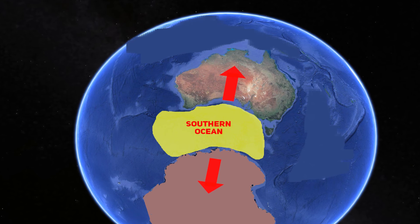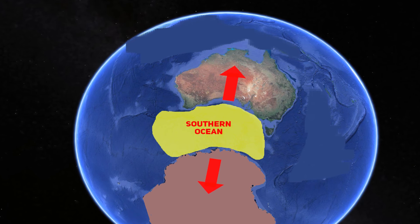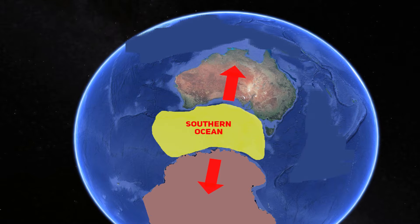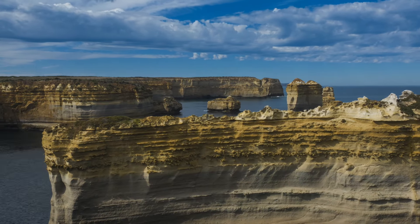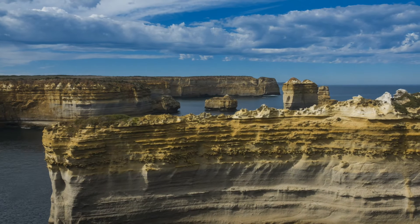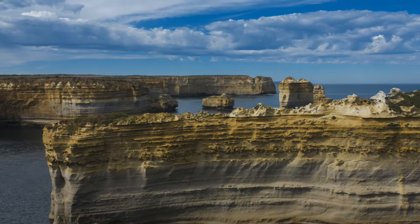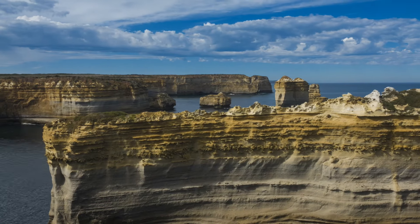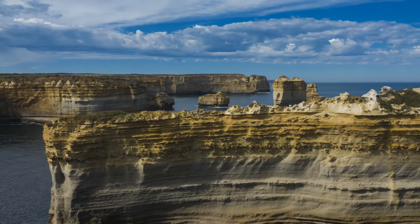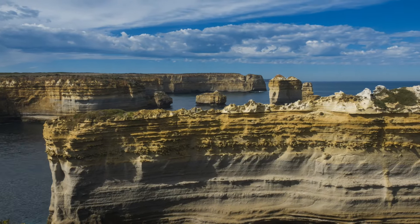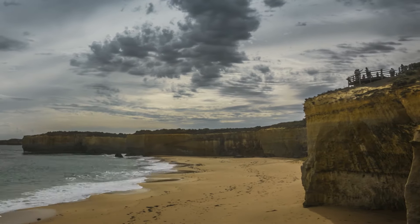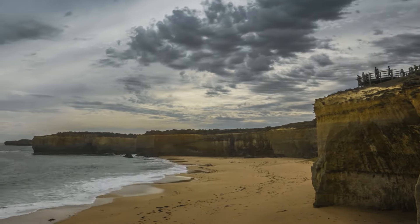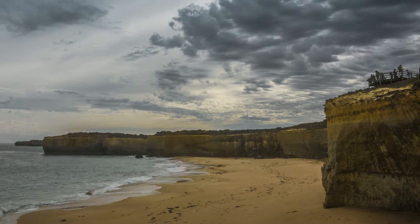It was during this period of seismic change that the Great Australian Bight began to take shape. The Southern Ocean, with its powerful waves and relentless energy, started to gnaw at the southern edge of the Australian continent. Over time, this constant abrasion carved out a vast arc in the land, creating the Bight's iconic cliffs and deep waters. These cliffs, towering and rugged, stand as silent witnesses to the unyielding force of the ocean's waves.